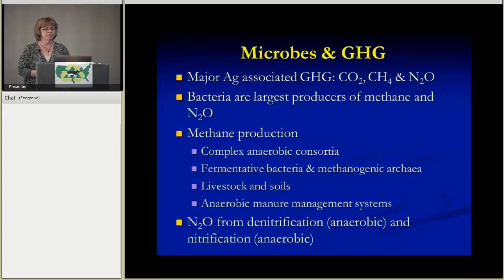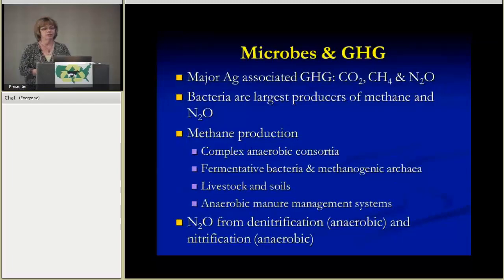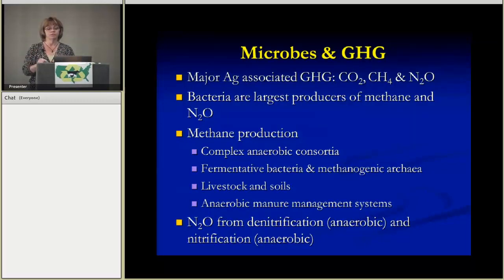I'll specifically talk about microorganisms and greenhouse gas production. We've all heard plenty about the different greenhouse gases important in agriculture: CO2, methane, and nitrous oxide. It's important to note that microorganisms are the key largest producers of these compounds in agricultural systems. Methane is produced in anaerobic systems in complex microbial consortia.